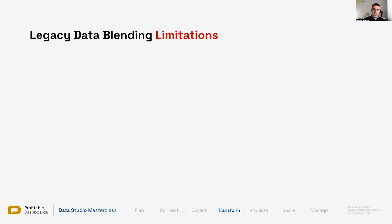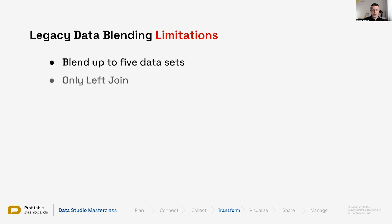Originally, when data blending was introduced, there were some limitations. The first limitation is that we can blend up to five data sources. The second one was that it only supported left join. And the final one was that the same join key needed to be present on all of the different joins. So if you had five data sources, the join key must have been the same.